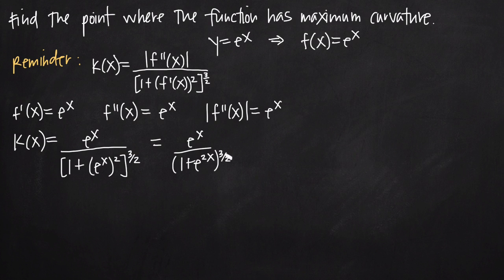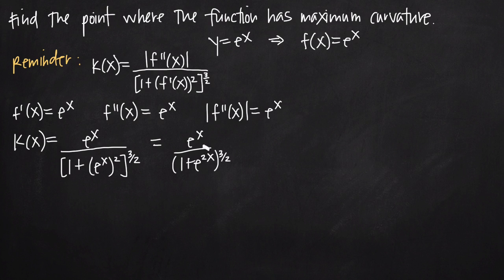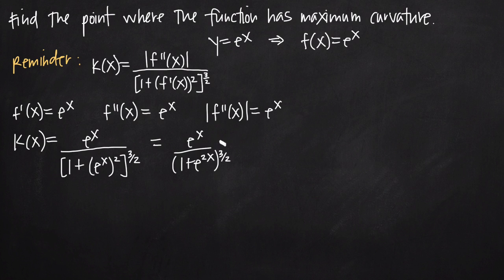When it comes to maximizing this curvature function, we follow the same process as maximizing a regular function. Remember from when we first learned derivatives and optimization: we take our function, find its derivative, set that derivative equal to zero to find critical points, and then test those critical points to find maxima. We do the same thing here — take the derivative of our curvature function, set it equal to zero, and find any critical points where a maximum might exist.